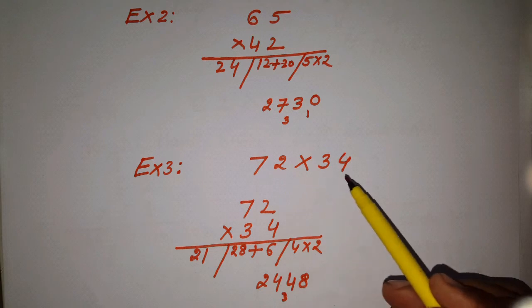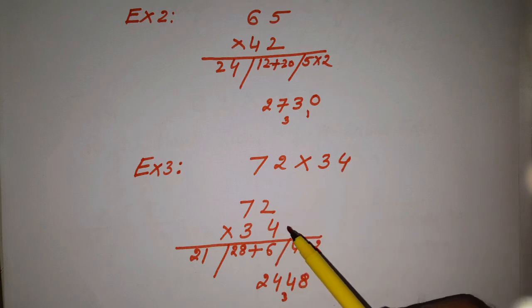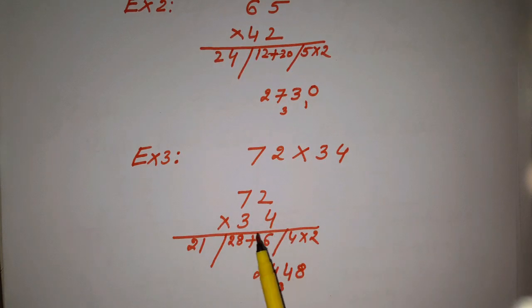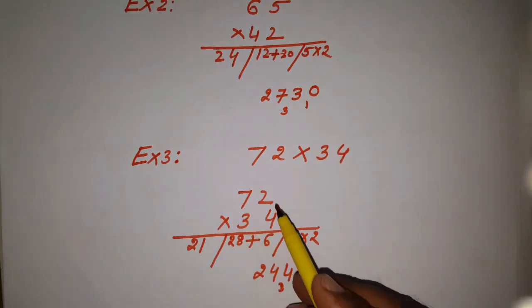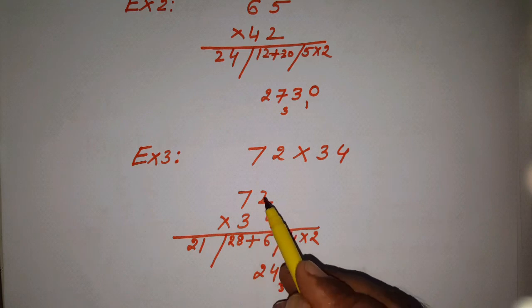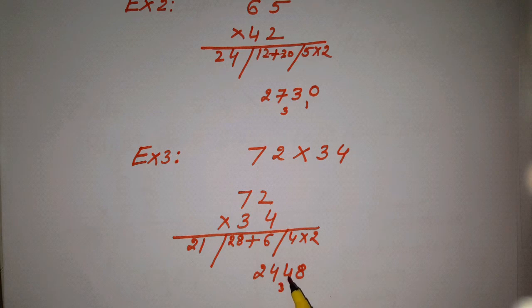Example 3: 72 times 34. Same process: 2 times 4 equals 8. Then crosswise multiply: 7 times 4 equals 28, and 3 times 2 equals 6. Twenty-eight plus 6 gives 34. Write 4 and carry 3. Then 7 times 3 equals 21. Twenty-one plus 3 equals 24. So the answer is 2, 4, 4, 8.